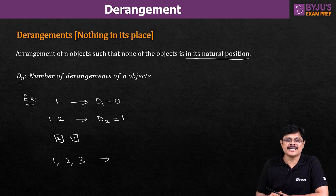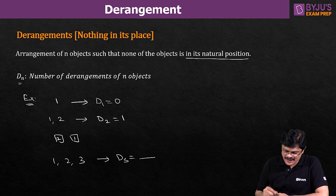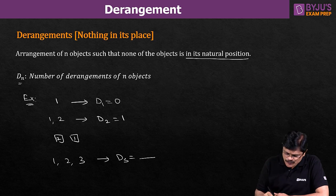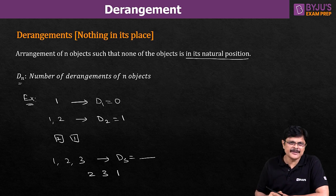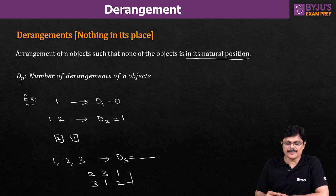Now suppose I have three numbers. How many derangements are possible such that no number is in its natural position? What is d3? One cannot be in first position, two cannot be in second position, and three cannot be in third position. So: two in first position, three in second, one in last — that works. Or three in first position, one in second, two in last — that also works. So how many such derangements are possible? Only two. So d3 equals 2.